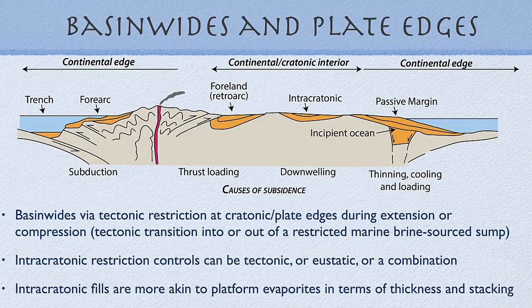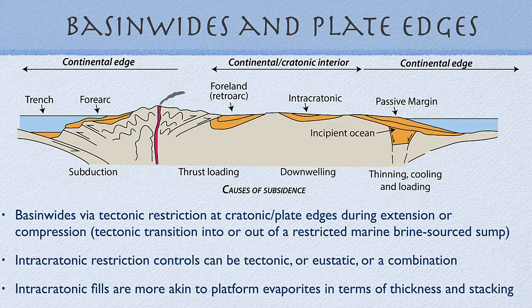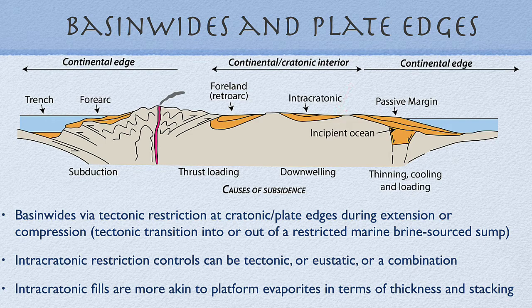In the broader framework of basin-wide and plate-edge associations, there are three general positions where evaporites form: on the continental edge in an opening passive margin scenario at the incipient ocean stage; on the continental edge during the subduction phase as the oceanic basin closes; and within the continental or intracratonic interior, where a series of relatively shallow-water sag basins are periodically evaporitic — again with mesohaline source rocks preceding or post-dating the main evaporite stage.